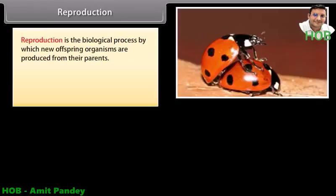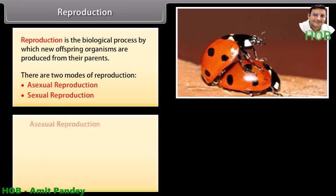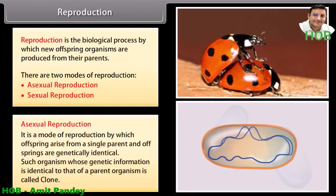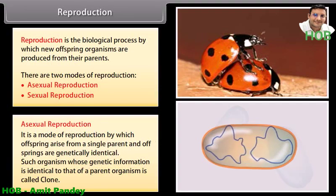Reproduction is the biological process by which new offspring organisms are produced from their parents. There are two modes of reproduction: asexual reproduction and sexual reproduction. Asexual reproduction is the mode of reproduction by which offspring arises from a single parent, and offspring are genetically identical.